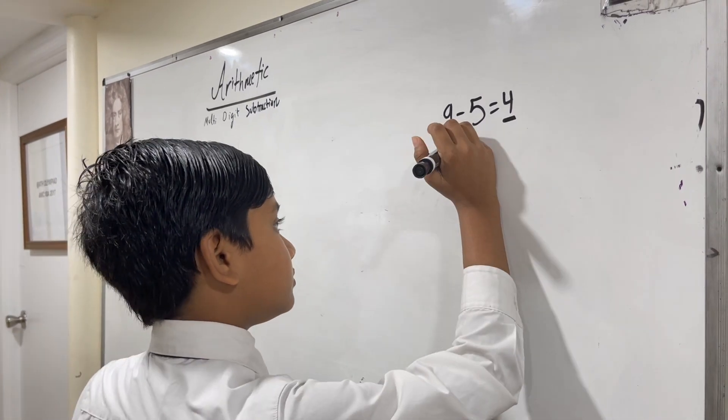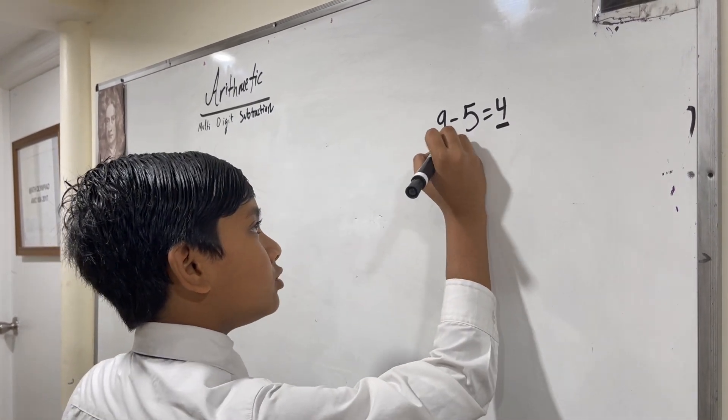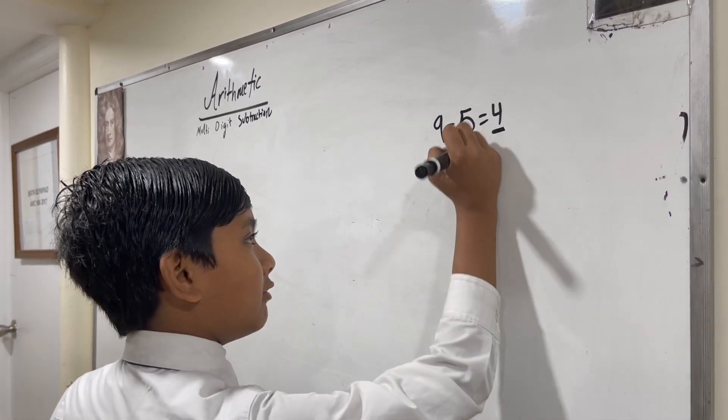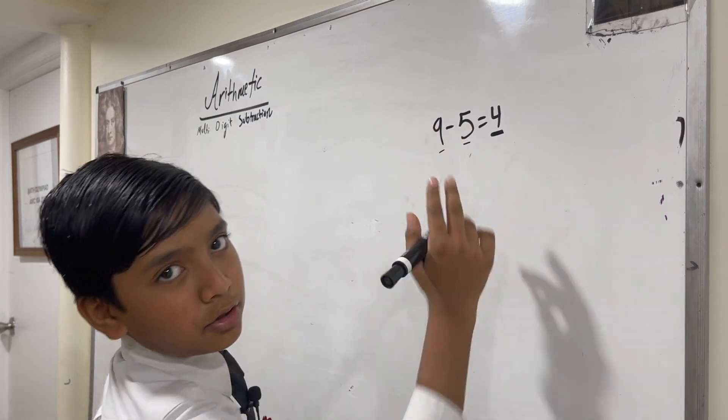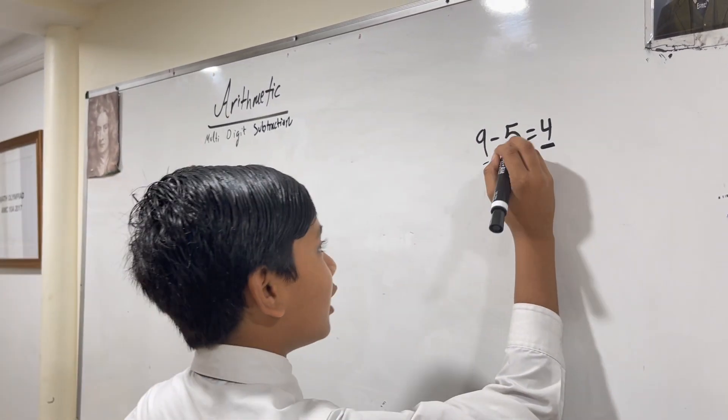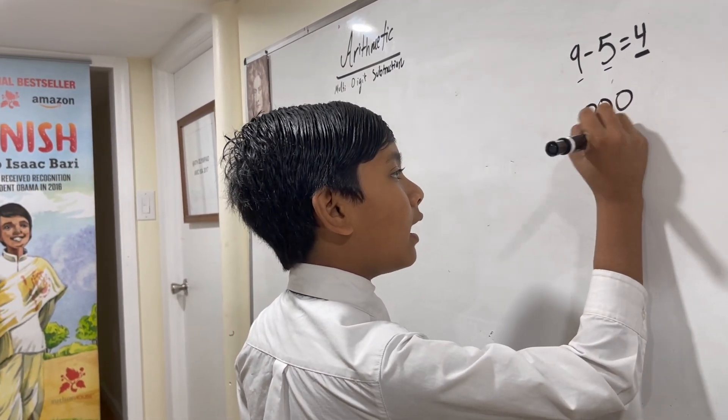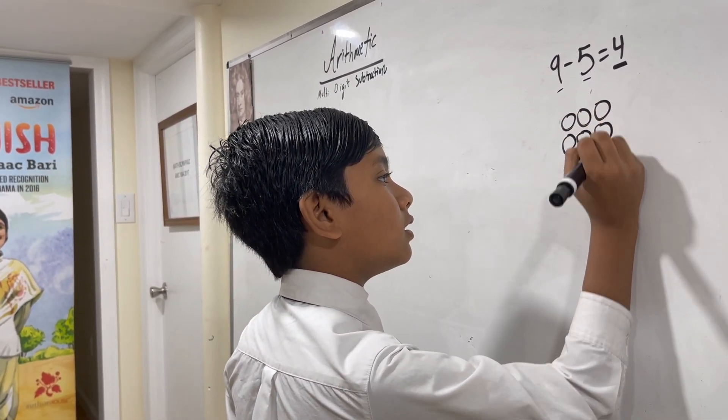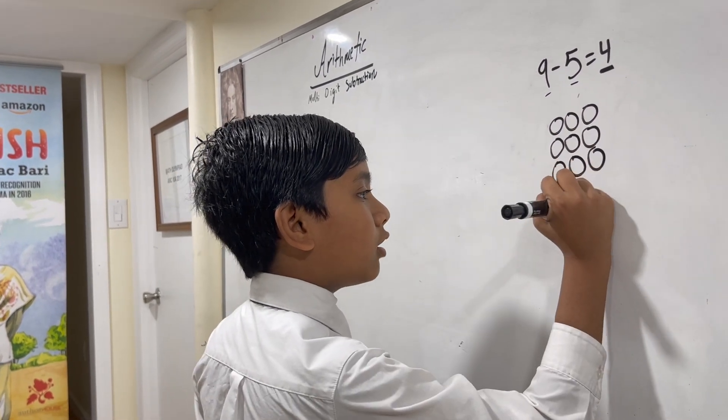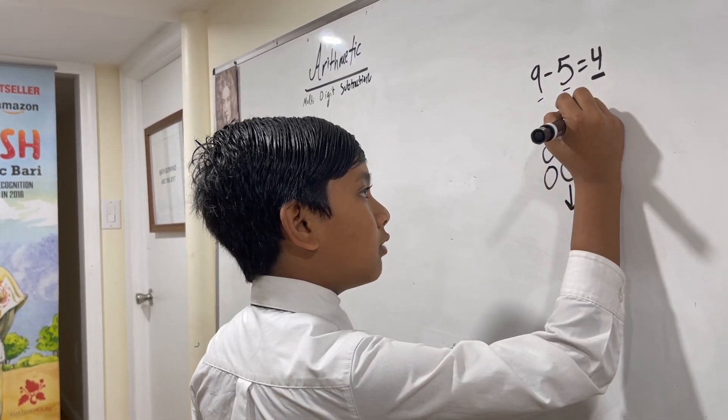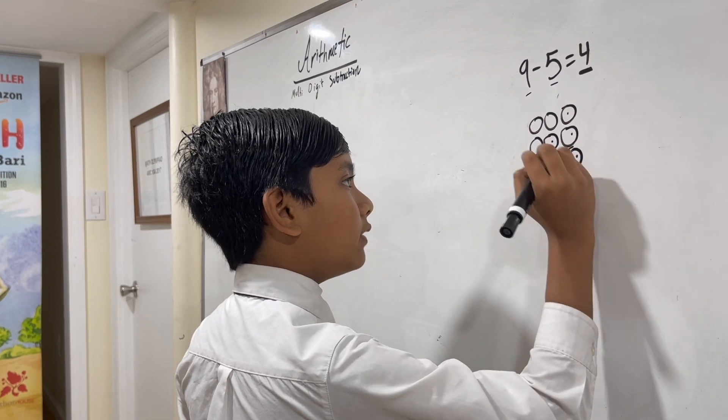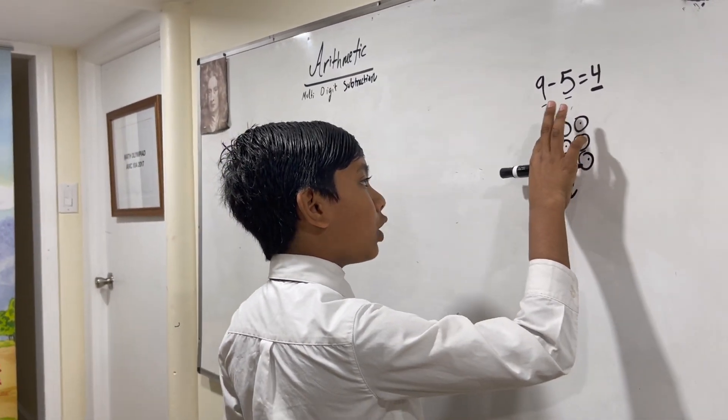These two have really complicated names—I think one of them was called a subtrahend—but you don't need to remember that. For example, in this equation we have nine, and then we're taking away five: one, two, three, four, five. So how many are there unmarked? Four.